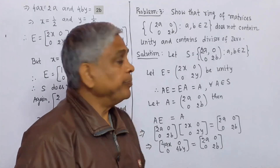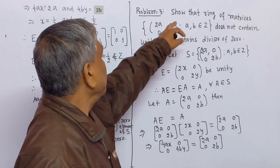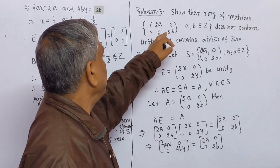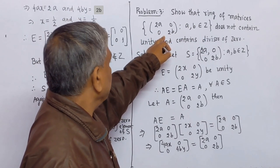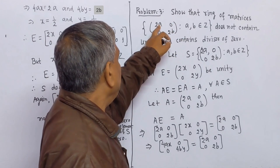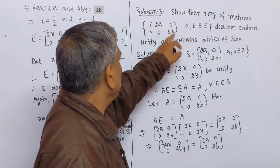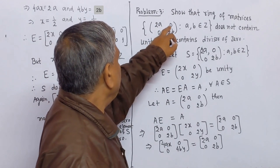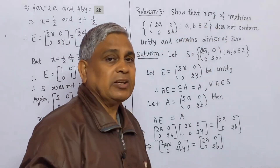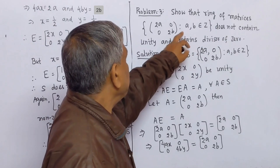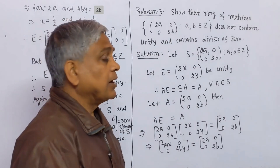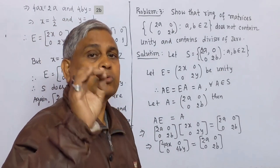Now we solve the next problem. The problem is to show that the ring of matrices in which each element is of the form of a 2-by-2 matrix with diagonal entries 2a and 2b and non-diagonal entries 0, where a, b belong to Z, the set of integers — this ring does not contain unity and contains a divisor of zero.